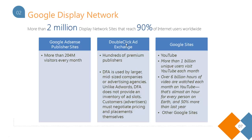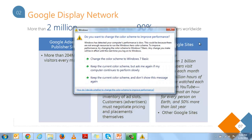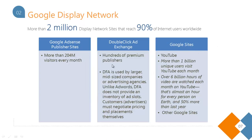The second kind of sites are your DoubleClick Ad Exchange, which includes hundreds of premium publishers. This is generally used by larger and mid-sized companies or advertising agencies. Unlike AdWords, it does not provide an inventory of ad slots — customers must negotiate the pricing and placement themselves. The third type of sites is your Google properties like YouTube, Blogger, Gmail, etc.